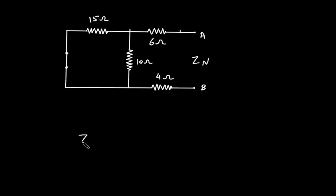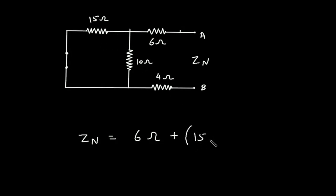Now, Zn is equal to: this will be 6 Ohm, plus — this 6 Ohm is in parallel — it is in series with 15 Ohm and this 10 Ohm, and they are connected in parallel. So it will be 15 Ohm parallel with 10 Ohm, and then it is in series with this 4 Ohm, so plus 4.